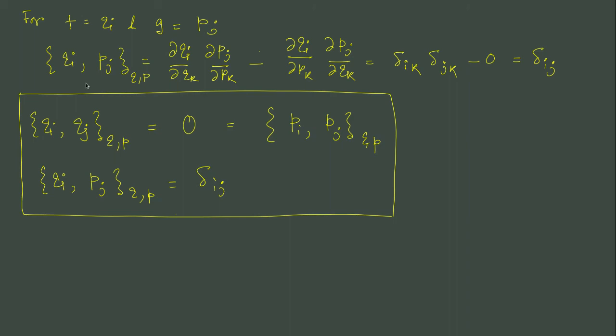Poisson bracket between a generalized coordinate and a generalized momentum will be 1 if the generalized momentum corresponds to that generalized coordinate, same generalized coordinate, then it is 1 and if they are different then they are 0. Meaning, suppose the generalized coordinate is x then x and px their Poisson bracket would be 1 but then x and py or y and px their Poisson bracket would be 0. That is the meaning of this particular result.